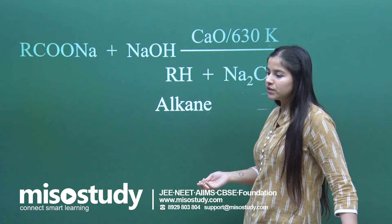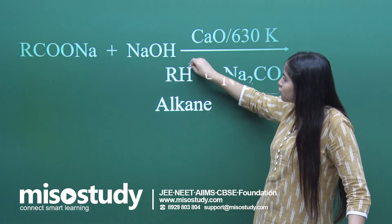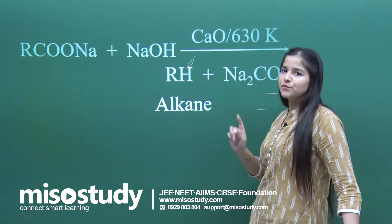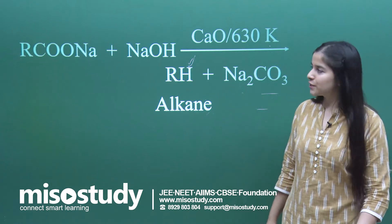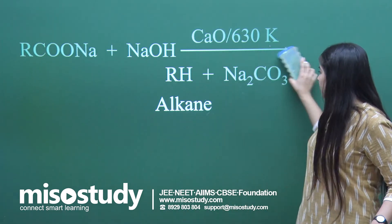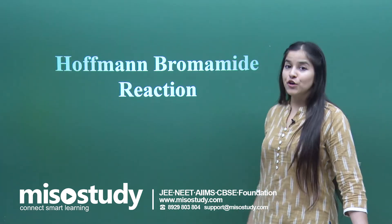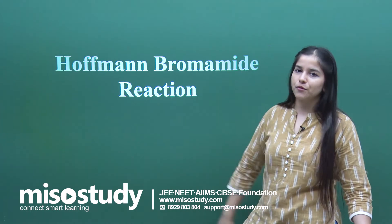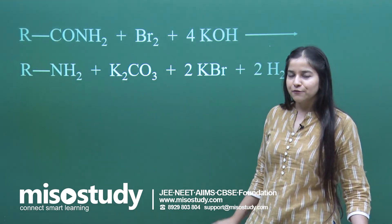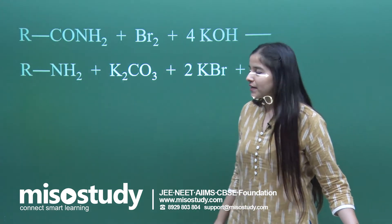In fact, more so than the Borodine-Hunsticker reaction, we can use this reaction to get a simple alkane from which we can further perform other reactions very well. The last one is the Hoffman bromamide reaction, also known as Hoffman degradation — also very important from your exam point of view and again very useful for descending the series. Here what we have taken is an amide.